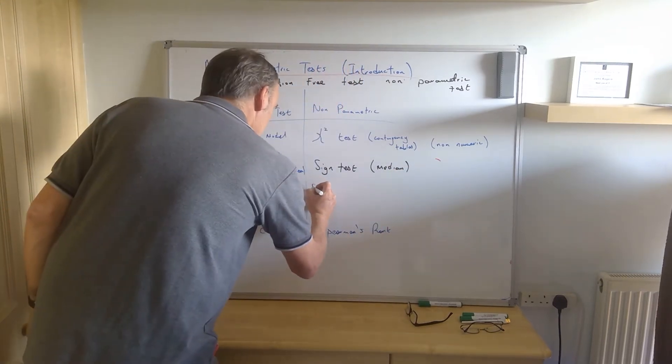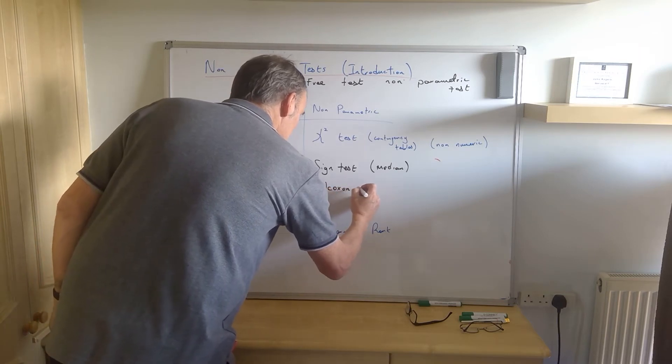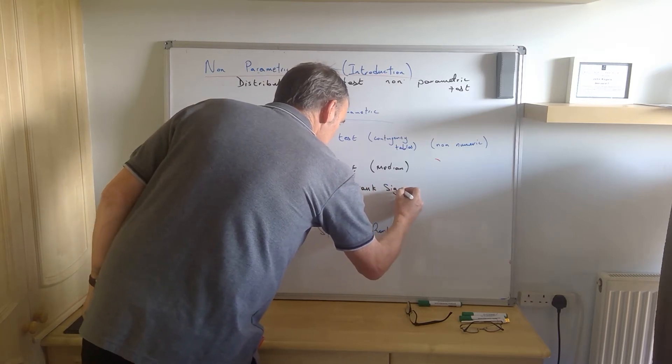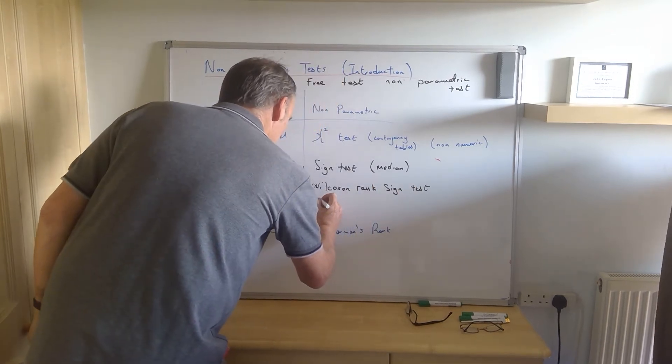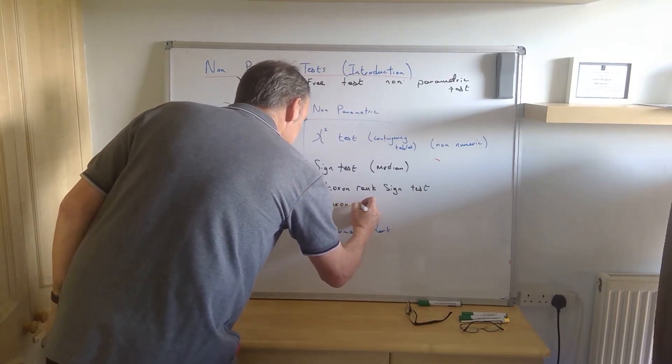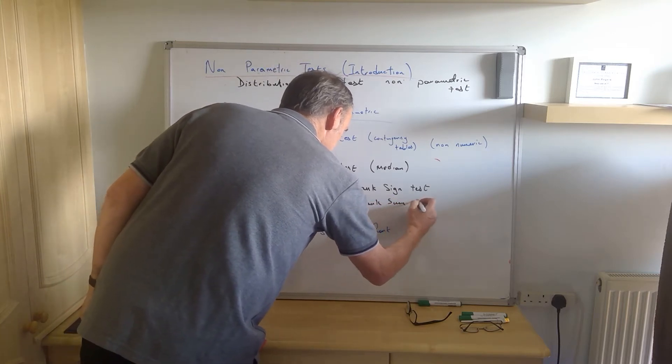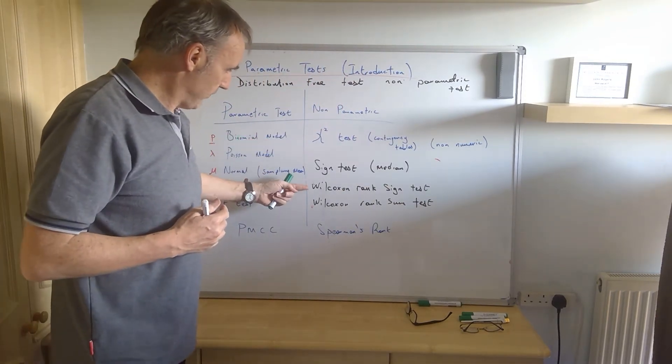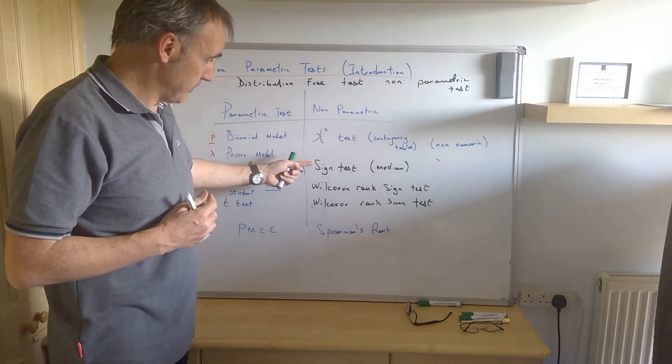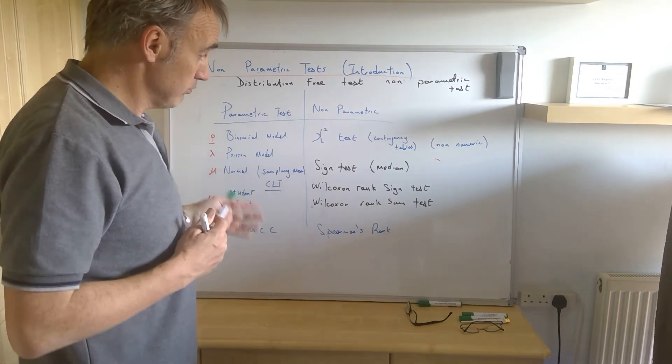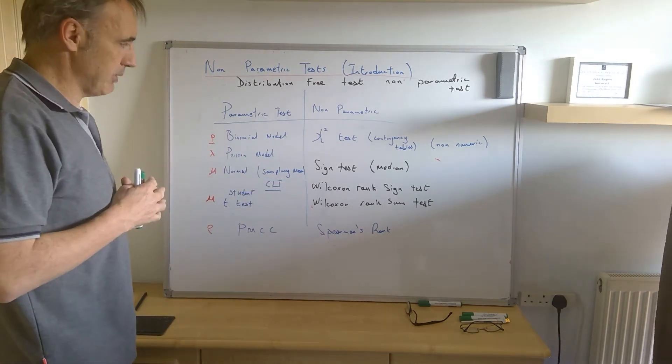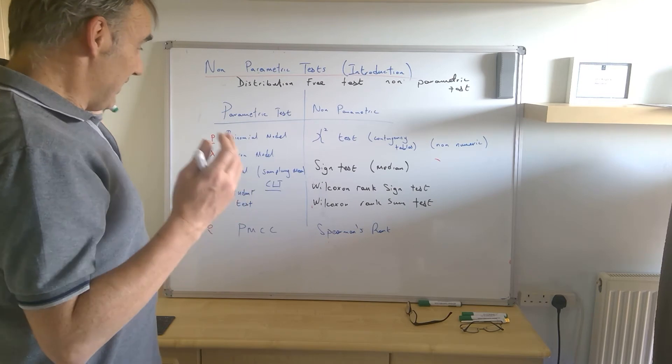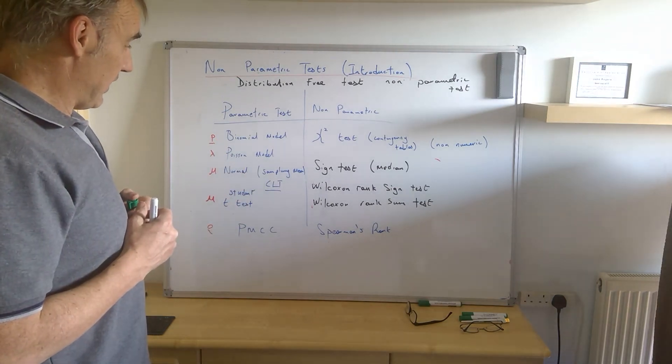And then we're going to do something called the Wilcoxon rank sign test. And then we're going to do another version of the Wilcoxon, another test from Wilcoxon, which is a rank sum test. And I say typically most of these involve testing around the median. But with this one, for example, we are, this makes no assumptions about the distribution whatsoever, whereas this one does assume it's symmetrical. So there is, as I said before, it doesn't mean there's no assumptions made. It's just fewer and less specific and certainly nothing to do with normal distribution. So there we go.